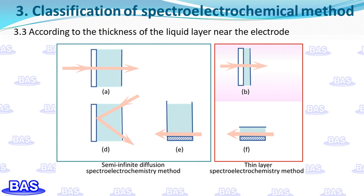There is also a classification based on the relative thickness of the solution layer near the electrode, dividing methods into thin-layer spectro-electrochemical method and semi-infinite diffusion spectro-electrochemical method. The thin-layer spectro-electrochemical method involves exhaustive electrolysis of the active material in the electrolytic cell; therefore, longer excitation times are used, such as longer electrolysis time in potential step experiments and slower potential scan rates in cyclic voltammetry. Semi-infinite diffusion spectro-electrochemical experiments generally use shorter excitation times. Commonly used electrical signals are single potential step, dual potential step, linear potential sweep, and constant current.